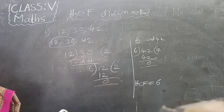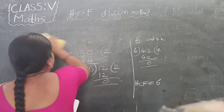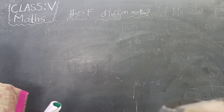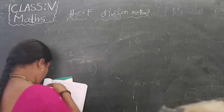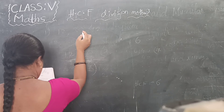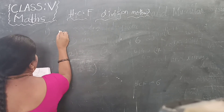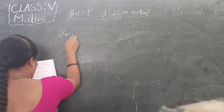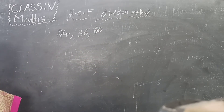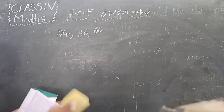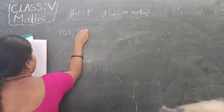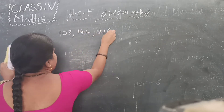One more problem. The numbers are 24, 36, and 60. Let's work through this on the next page: 24, 36, 60.